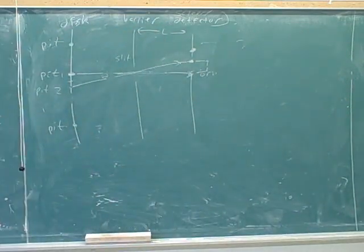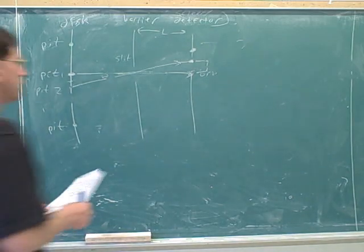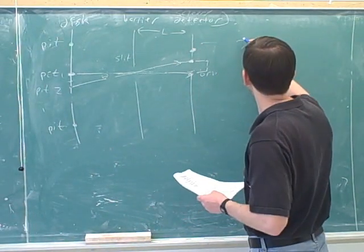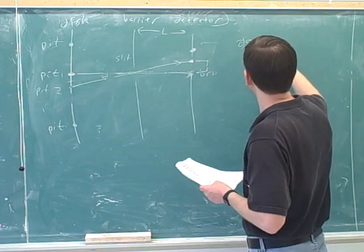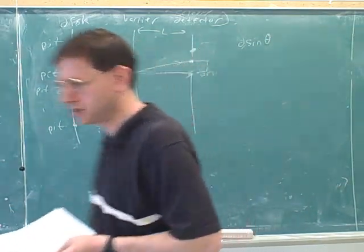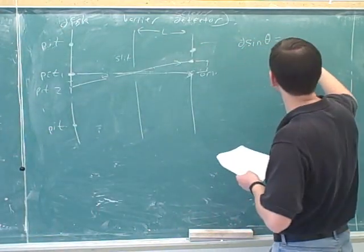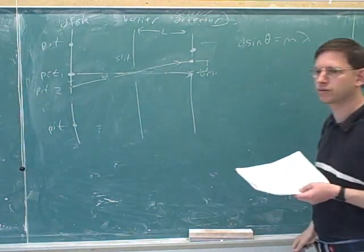And then they give you theta, and then you need the frequency. So from the D sine theta equation, it is the first bright fringe, so M equals one. And you have D, and you have theta. So you can find the wavelength from them and then get the frequency.